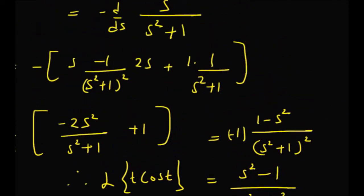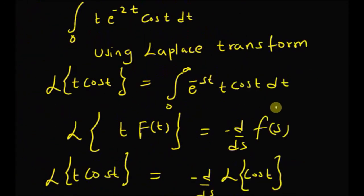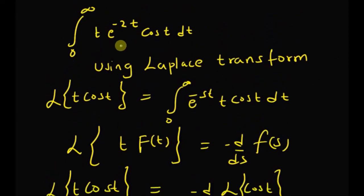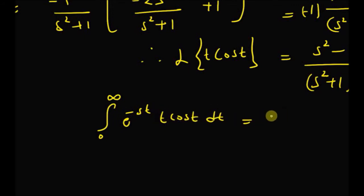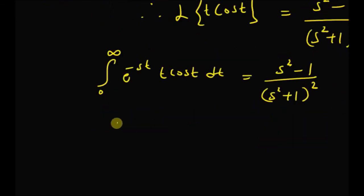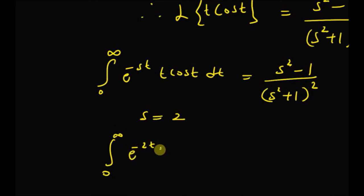Now we use this result to evaluate the given integral. By the definition of the Laplace transform, the integral from 0 to infinity of e^(−st) · t · cos(t) dt equals (s² − 1)/(s² + 1)². Substituting s = 2, we obtain exactly the integral we wanted to evaluate: the integral from 0 to infinity of e^(−2t) · t · cos(t) dt.